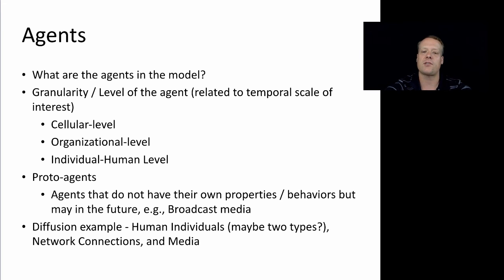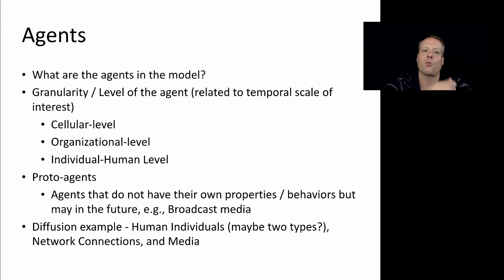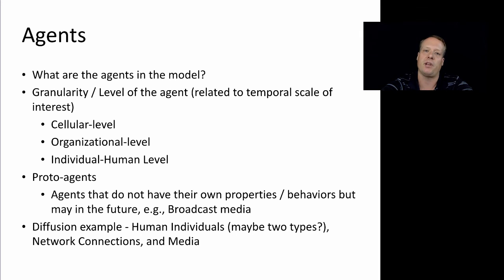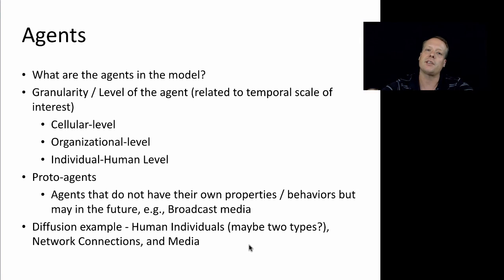In the diffusion example, I can think of at least three types of agents: human individuals, network connections — which are agents themselves, since the social connection between two individuals could be an agent with its own properties like weight and confidence — and the broadcast media. Interestingly, human individuals might have different types as well. We might have some agents who are really experts in their field and have more ability to influence others than non-experts. In the traditional diffusion literature, there's often a discussion about what are called influential agents versus imitator agents, so we might think about multiple types from that context.